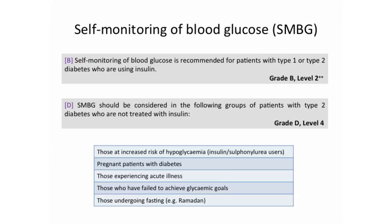SMBG is particularly useful for patients at increased risk of hypoglycemia — those on insulin or sulfonylurea therapy — enabling them and their family members to check and prevent worsening hypoglycemia. Pregnant patients with diabetes represent a different situation entirely. Those experiencing acute illness may have fluctuations in glycemic excursion. Patients who have failed to achieve glycemic goals may benefit from monitoring to raise awareness of hyperglycemia and spur behavioral modification. During fasting months, Muslim patients should ideally monitor more frequently to avoid hypoglycemia risk.